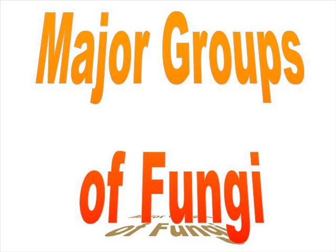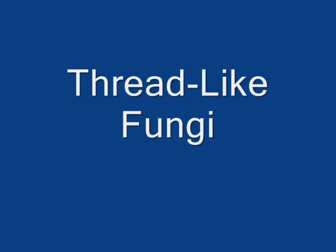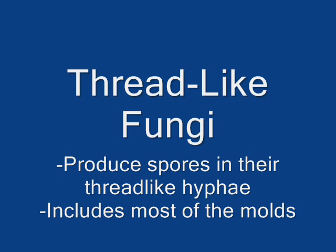There are four major groups of fungi that we're going to discuss today. The picture you see here is bread molds growing in petri dishes. Bread molds are a type of thread-like fungi. This group contains about 600 different species of molds, including many common bread molds such as the rhizopus, which is the most common bread mold you usually see on your breads. These fungi produce spores in thread-like hyphae, thus the name thread-like fungi.